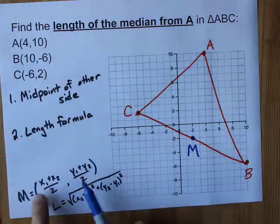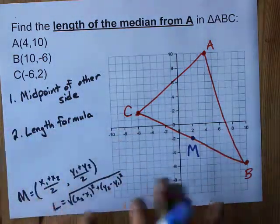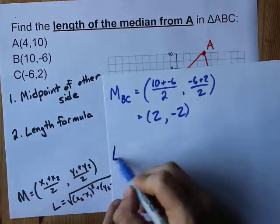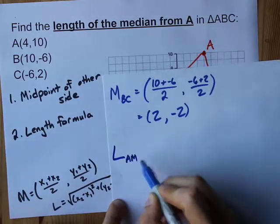Even though we had a different formula where the x's and y's came from B and C, just don't get super confused. We're looking for the length from A to M here.